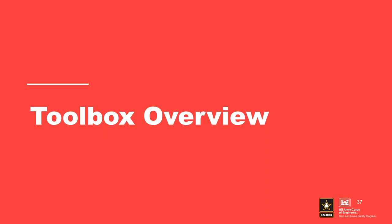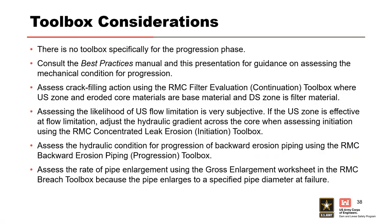Toolbox Overview. There is no toolbox specifically for the progression phase. Please consult the best practices manual and this presentation for guidance on assessing the mechanical condition for progression. Assess crack filling action using the RMC filter evaluation continuation toolbox where an upstream zone and eroded core materials are the base material and the downstream zone is the filter material. Assessing the likelihood of upstream flow limitation is very subjective. If the upstream zone is effective at flow limitation, adjust the hydraulic gradient across the core when assessing initiation using the RMC concentrated leak erosion initiation toolbox. Assess the hydraulic condition for progression of backward erosion piping using the RMC backward erosion piping progression toolbox. Assess the rate of pipe enlargement using the gross enlargement worksheet in the RMC breach toolbox because the pipe enlarges to a specified pipe diameter at failure.